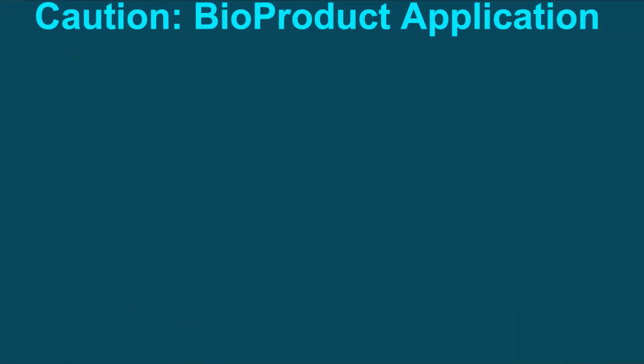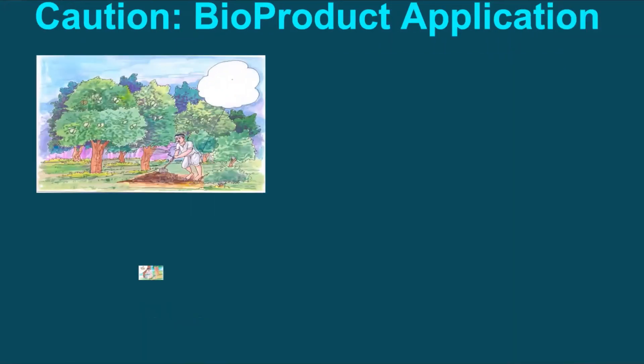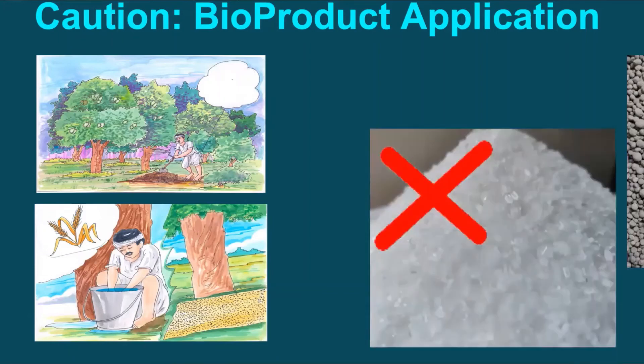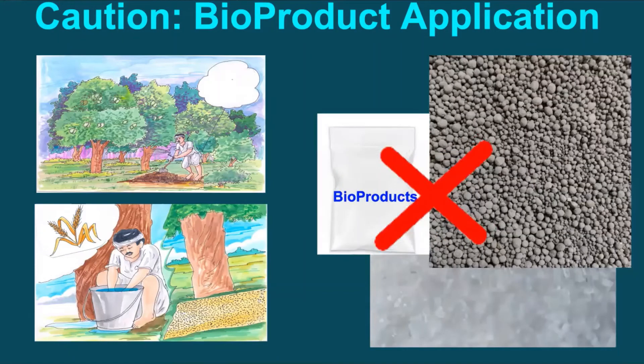For better results, it is suggested to perform most operations in the shed. Proper storage and handling is important to keep the microbes alive and thriving. Microbes are vulnerable to ultraviolet rays, so they must be stored away from sunlight, heat, and wind. For better efficacy, direct mixing of bioproducts with chemical inputs should be avoided as far as possible.